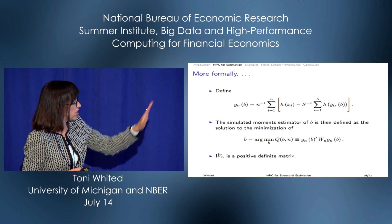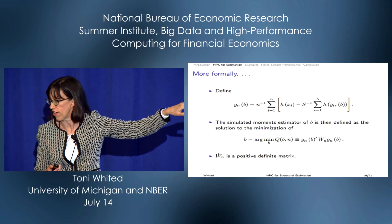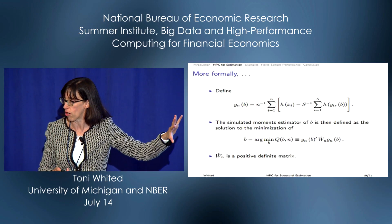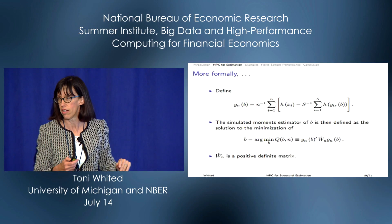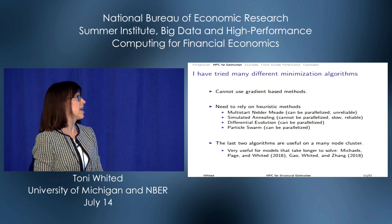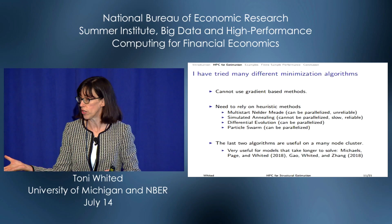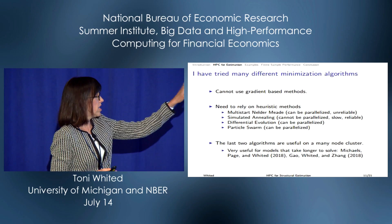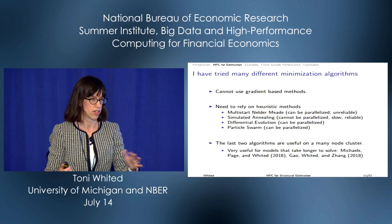The objective function is the difference between the real data statistics and the model-based statistics, which are a function of the model parameters. You minimize a quadratic form in the objective where W is a weight matrix. You can't use gradient-based methods because these models have no closed-form solutions — taking a numerical gradient might not be accurate and the whole thing blows up. You need heuristic methods, which often haven't been proved to reach a global minimum, but eyeballing them, sometimes they really do.